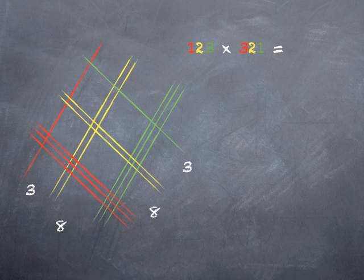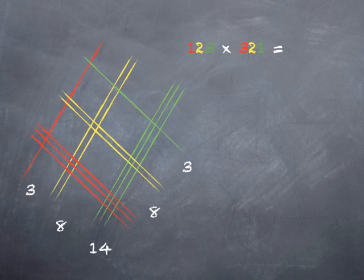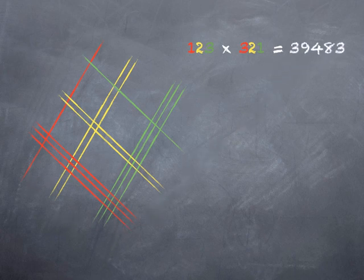In the middle, I either have red intersecting green, which is ones and hundreds, or I have yellow intersecting yellow, which is tens and tens. Either way, that's the hundreds place. And if you count them up, you wind up with 14 hundreds. Now, just like in regular multiplication, that's a problem. I can't have 14 in the hundreds place, so that really is 1,400. So I take that 1, and I bump it over to the thousands place, and I wind up with 39,483, which happens to be the correct answer.